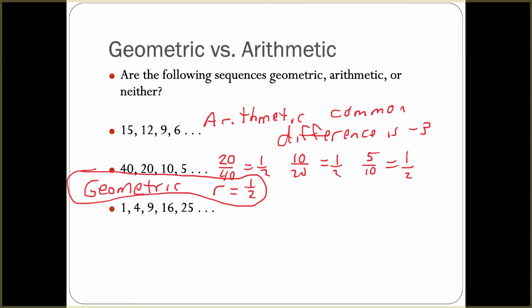The last one we have is 1, 4, 9, 16, 25. If you look at this, we add 3, then we add 5, then we add 7, then we add 9, and this is neither. If we divided these out, we'd find that there is not a common ratio, there is not a common difference.